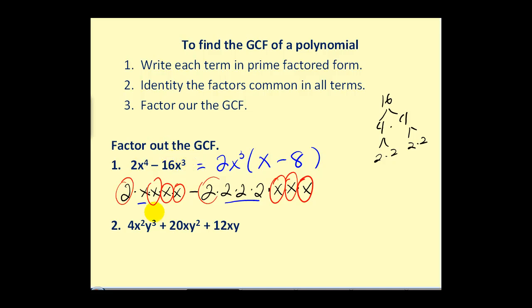Now, the rest of the problems will be essentially the same. It doesn't matter how many terms we have. Write it out in prime factored form, identify the common factors, and then factor out the GCF.